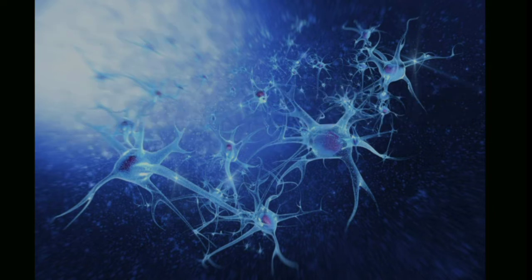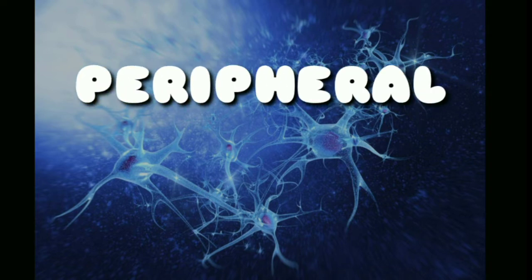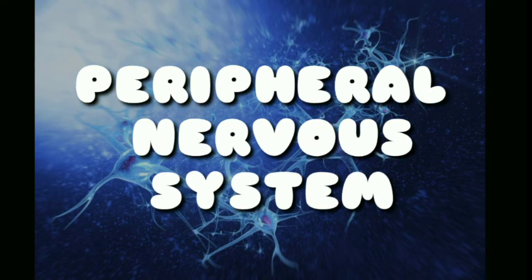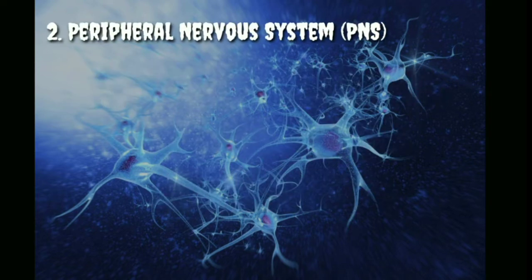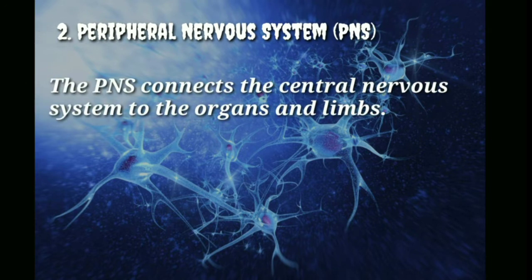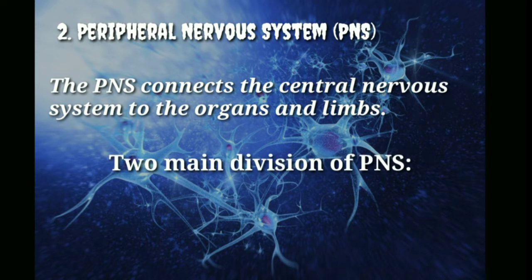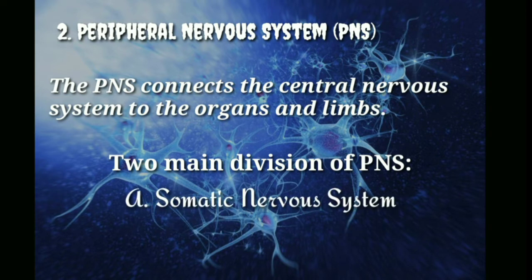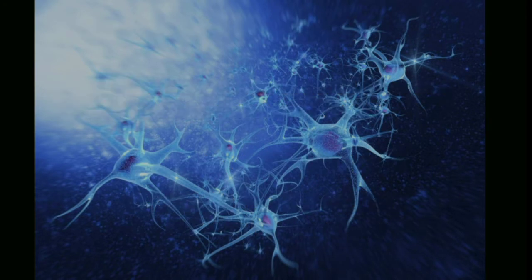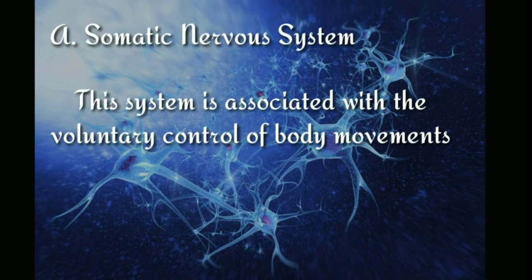The second major division of the nervous system is the peripheral nervous system, or PNS. The function of the peripheral nervous system is to connect the central nervous system to the organs. The PNS also has two main divisions: the somatic nervous system and the autonomic nervous system.